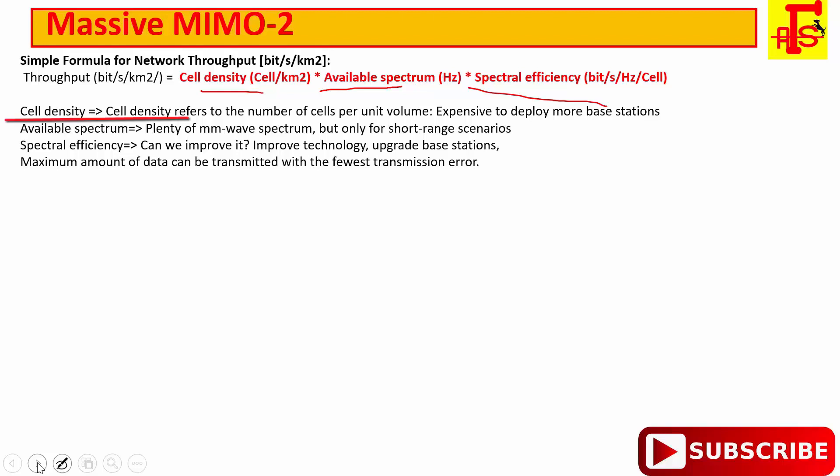First is cell density. Cell density refers to the number of cell per unit volume. If you want to increase the cell density, that really means that you put up more base stations. We are putting more base stations in distance of 100m to 200m. But it is expensive to deploy more base stations.